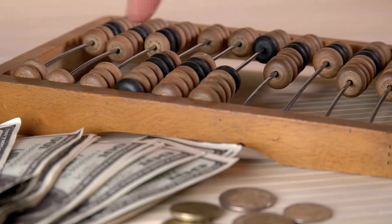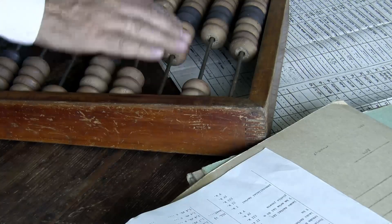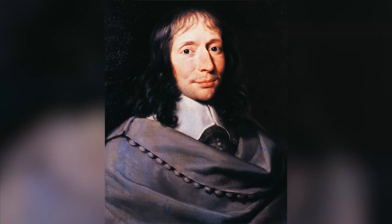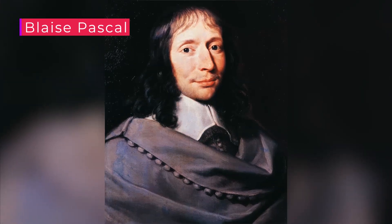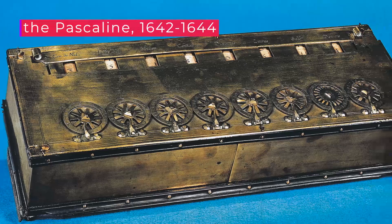People used this machine to count and keep track of money, and other things for a very long time. Then, between 1642 and 1644, Blaise Pascal made the Pascaline.